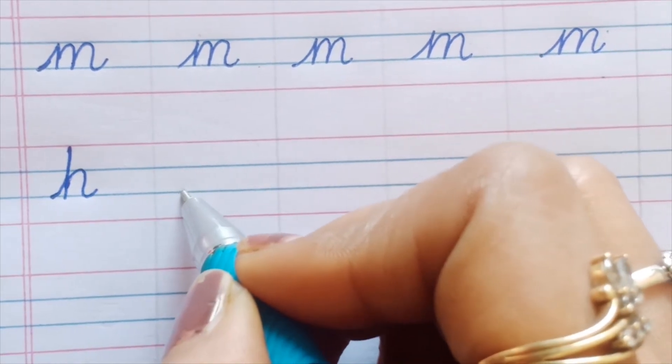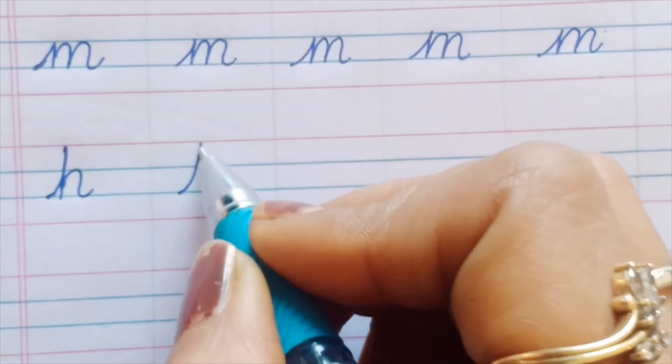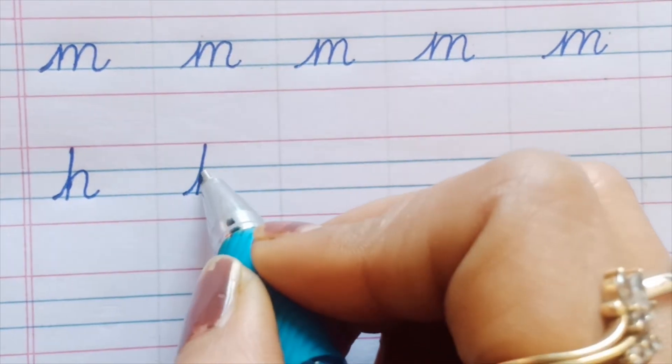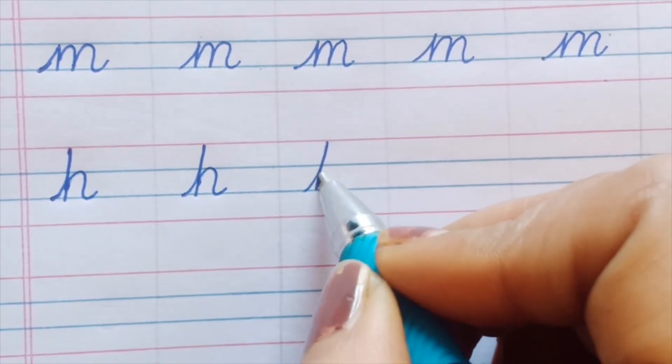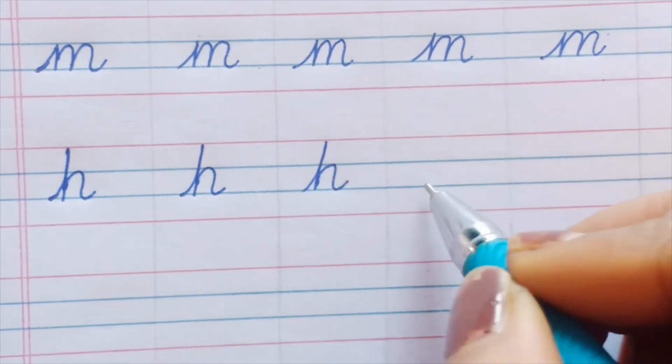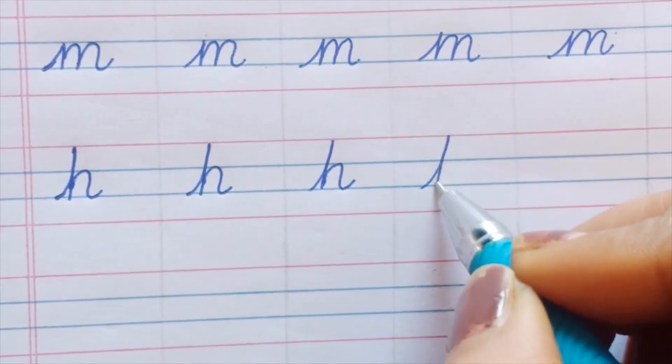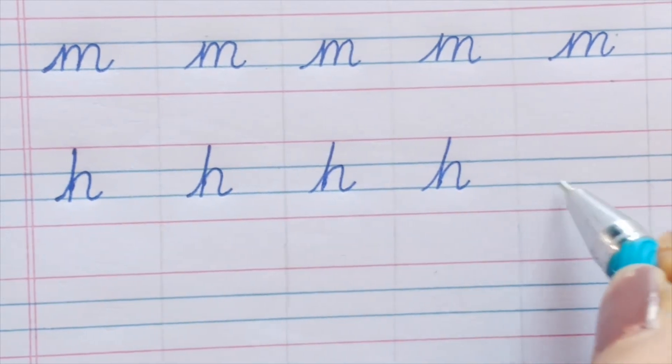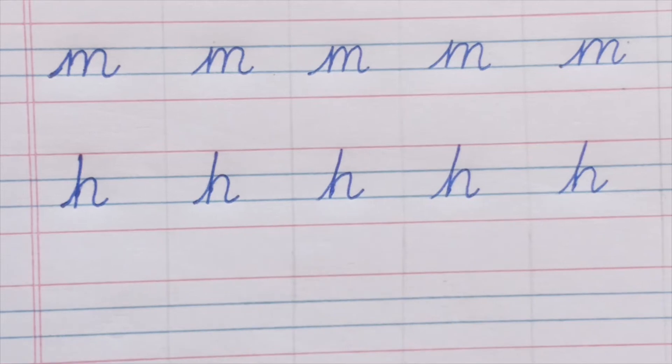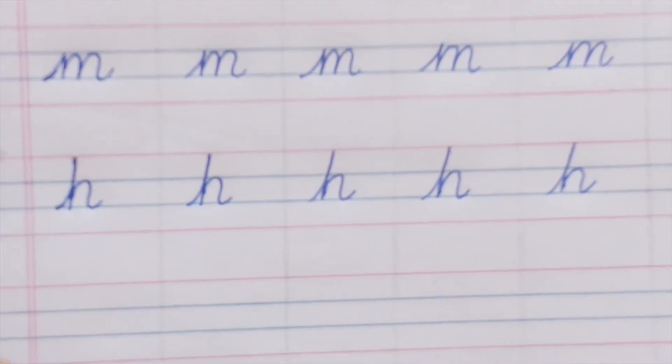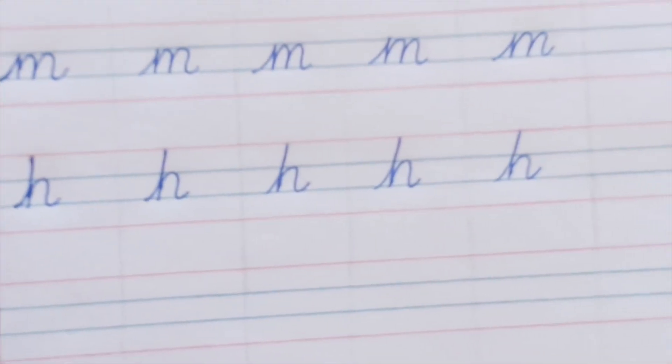So let's start once again: top line, then bring it back and bump. Top line, bring it back, bump and a tail. Like this and a tail. You can write one full page of this letter.